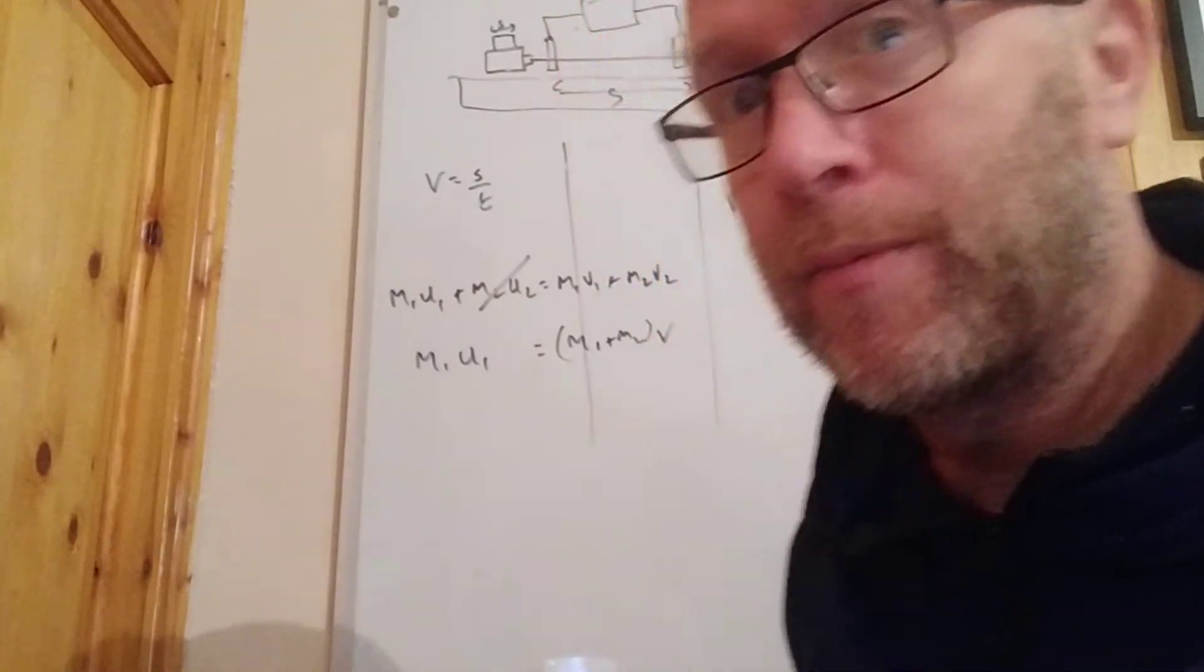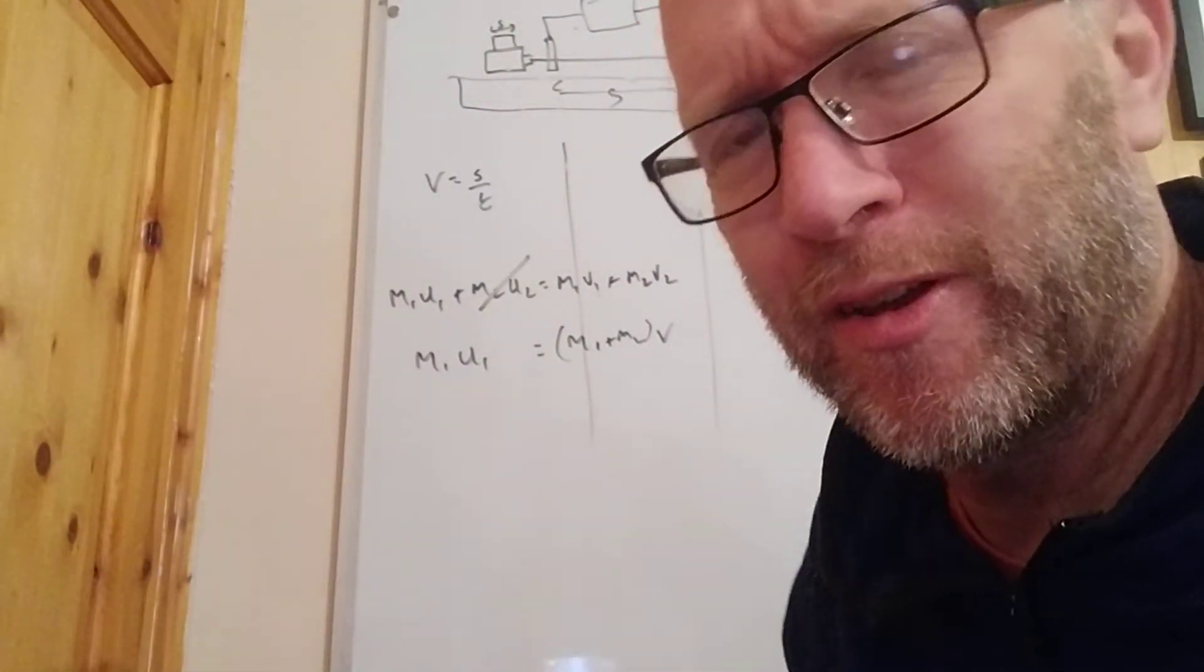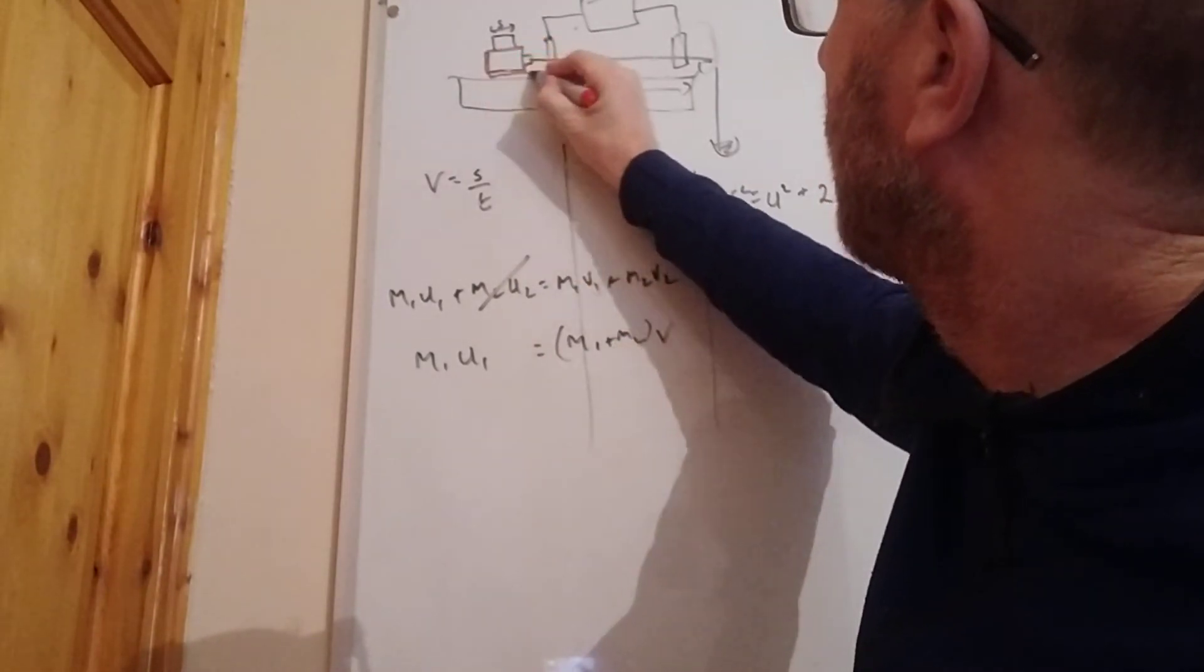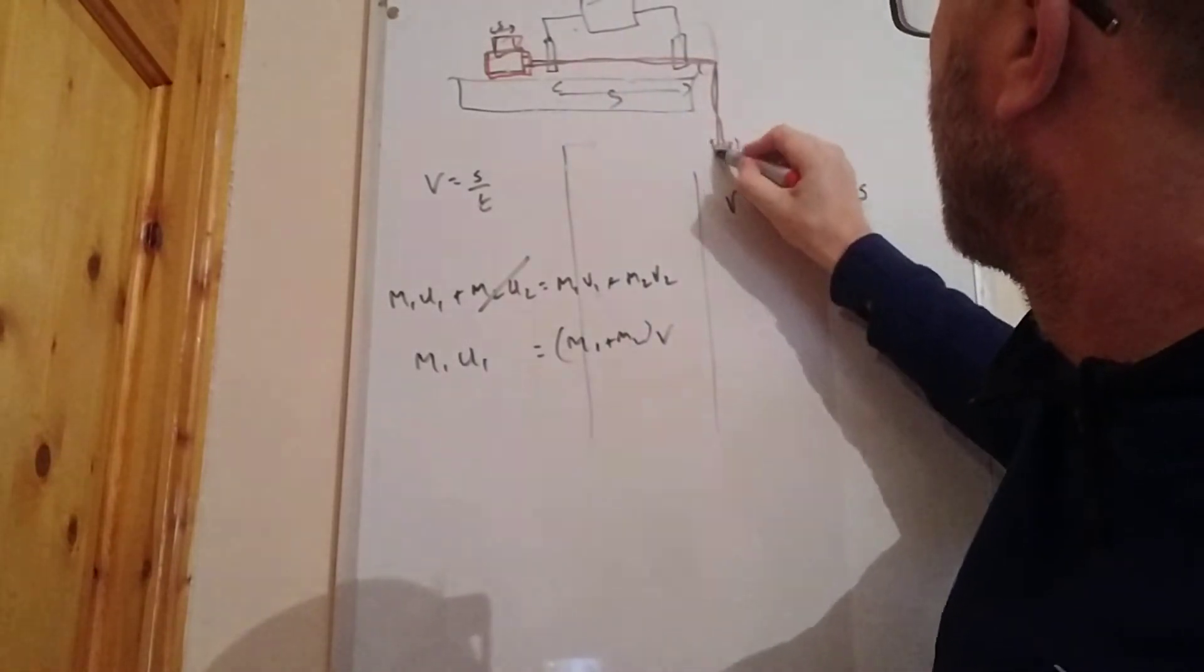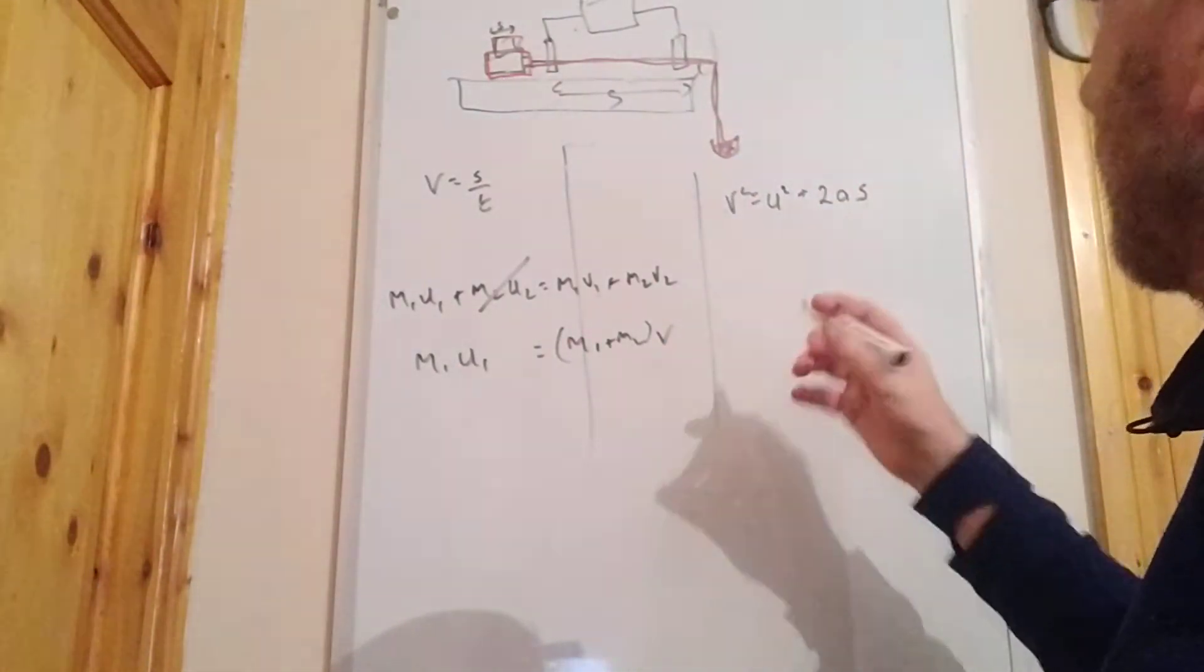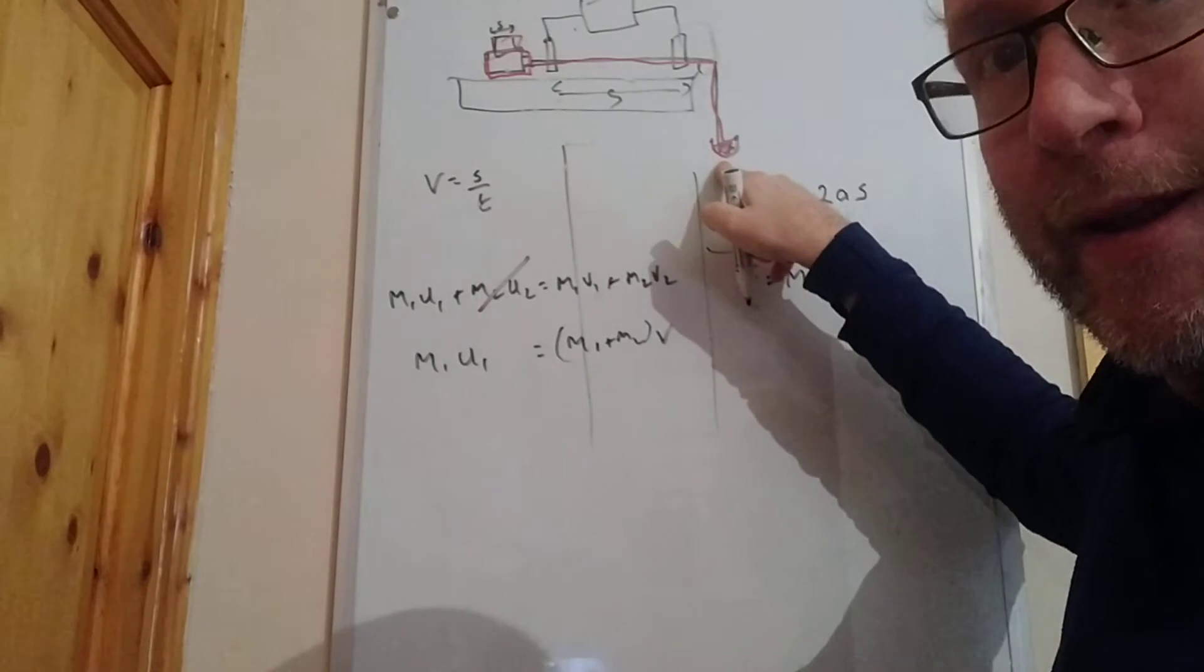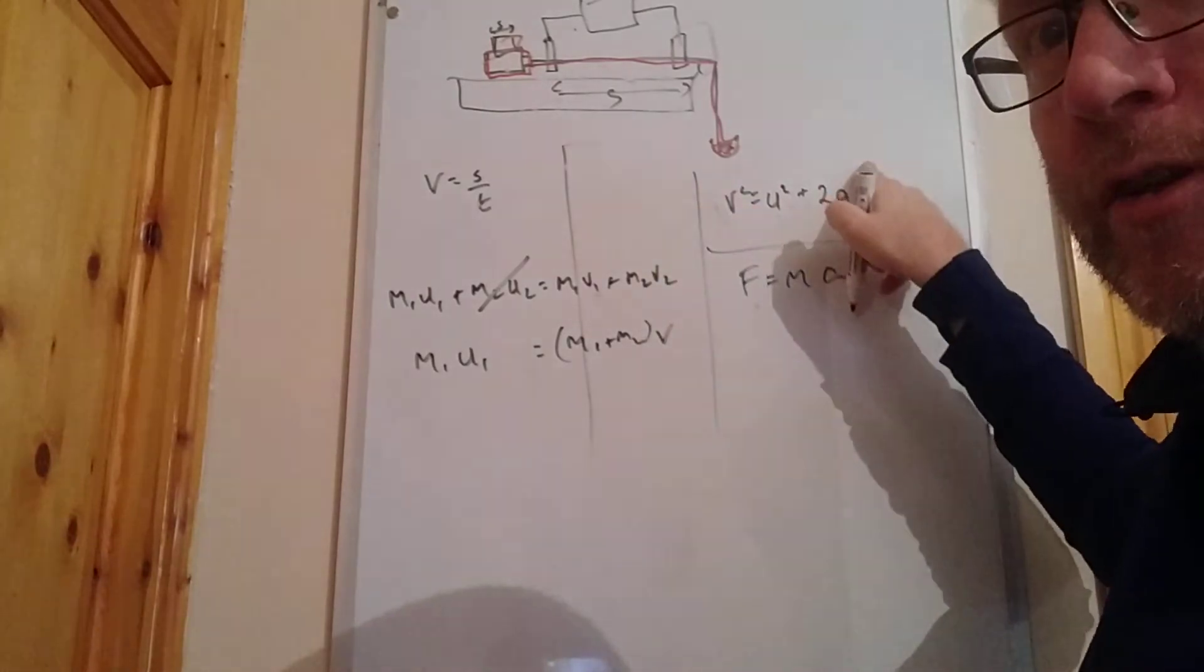When you're learning these, you're learning the four experiments together. Final one, same setup. You want to find the relationship between acceleration and force. Remember the issue: we're accelerating a body, this is the body we're accelerating. All of that is being accelerated, and we can only have two variables. F = ma.